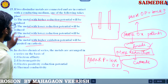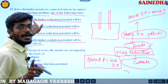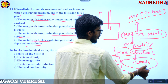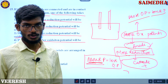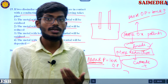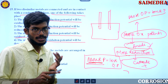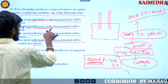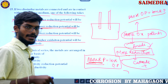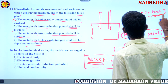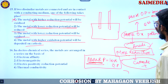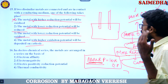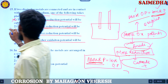Evaluating the options: the metal with higher reduction potential will not be oxidized — it is the cathode, so it gets reduced. The metal with lesser reduction potential is actually oxidized, not reduced — that is also wrong. So those options are incorrect.